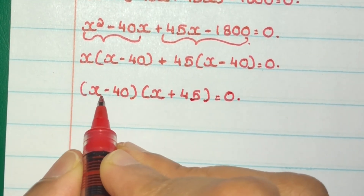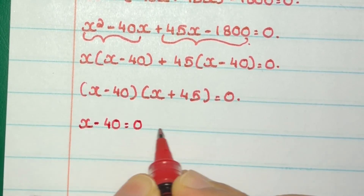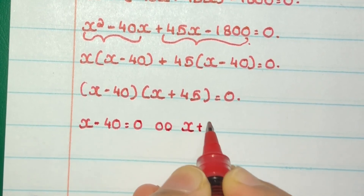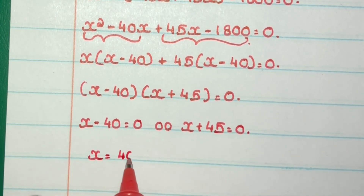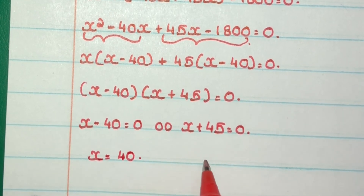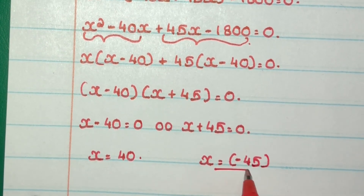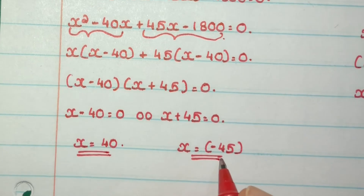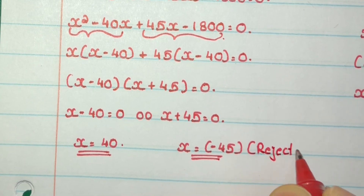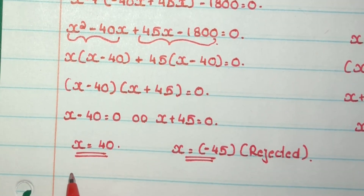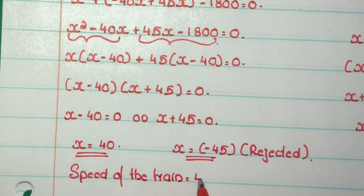Either x minus 40 equals 0 or x plus 45 equals 0, which gives x equals 40 or x equals minus 45. Since x represents speed, it cannot be negative. So x equals minus 45 is rejected. Therefore, the speed of the train is 40 kilometers per hour.